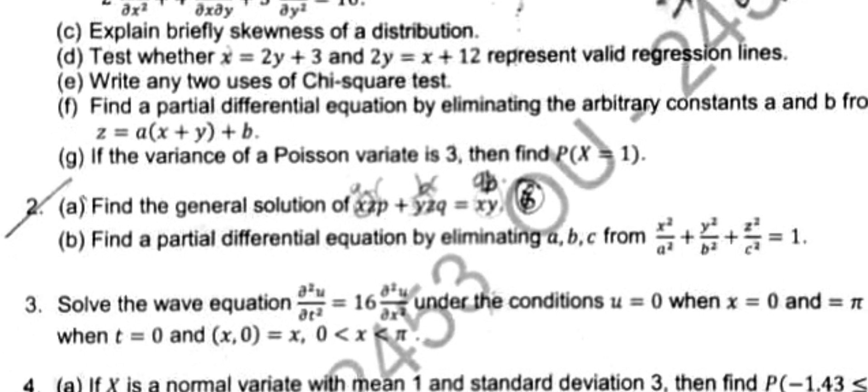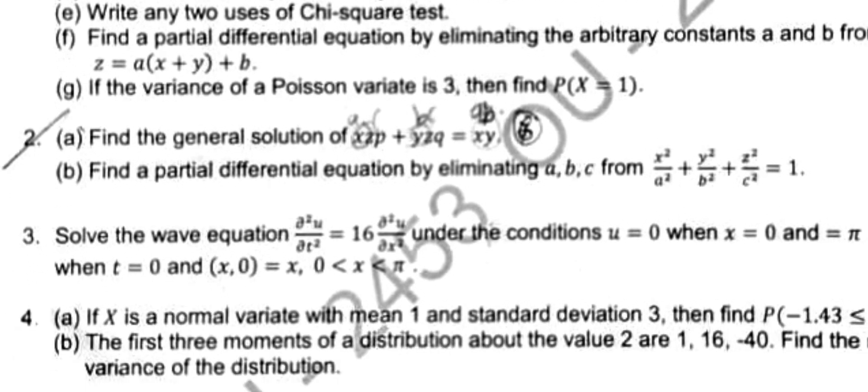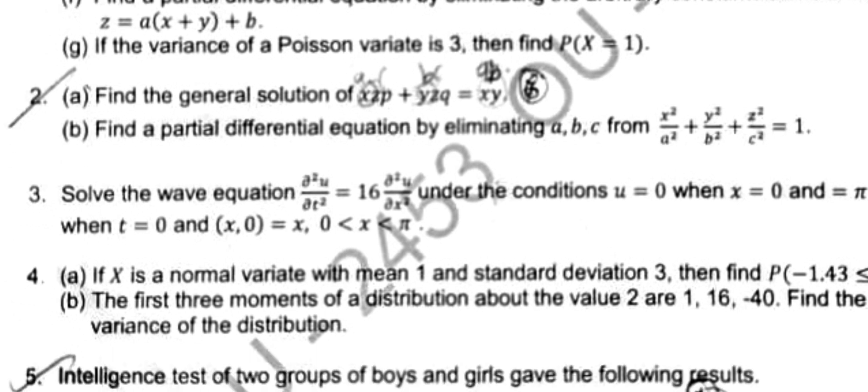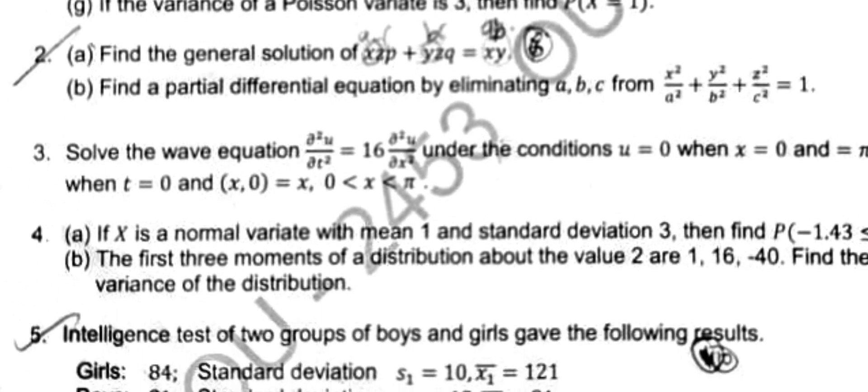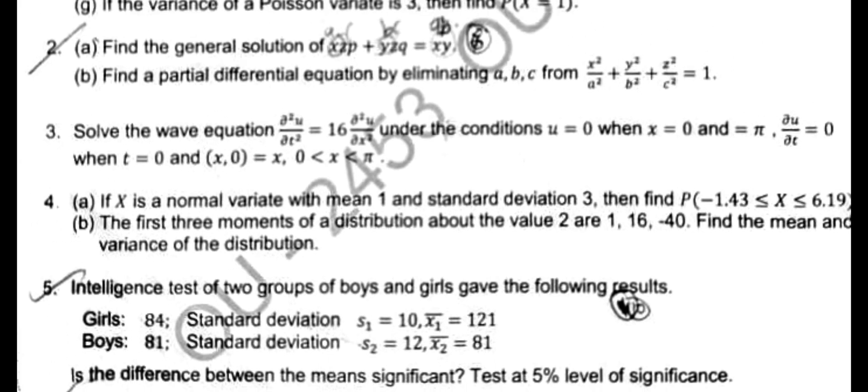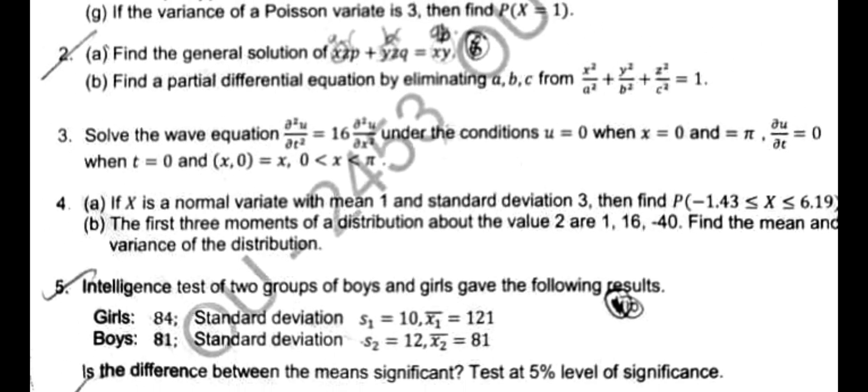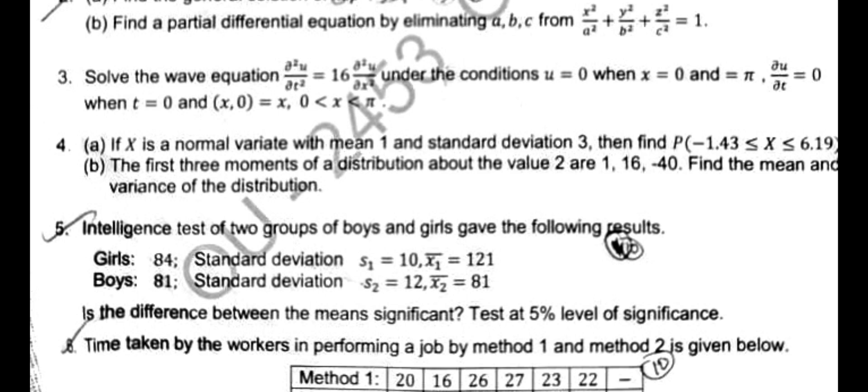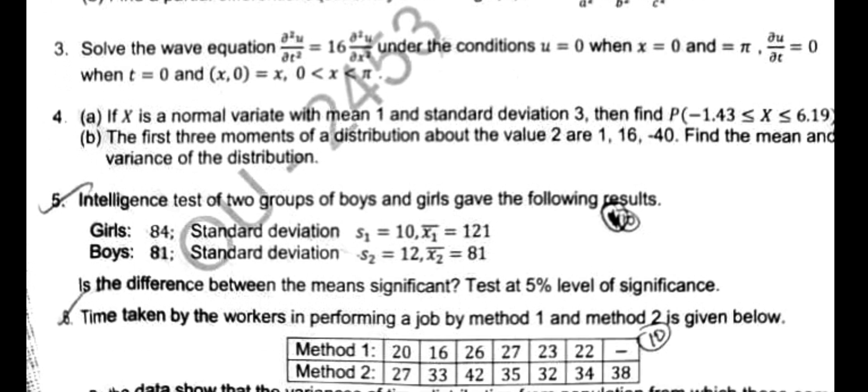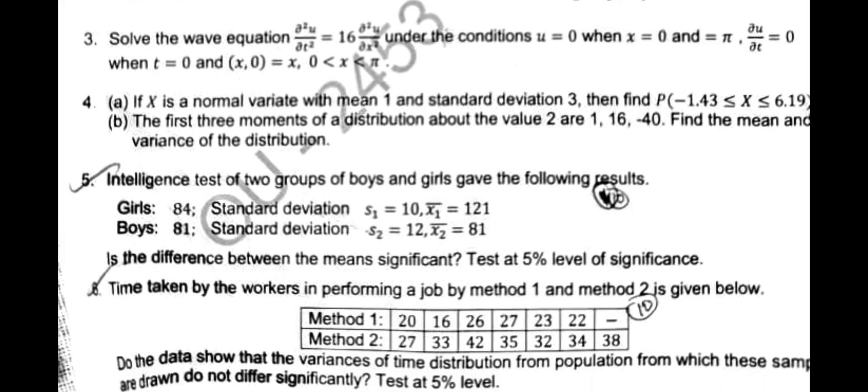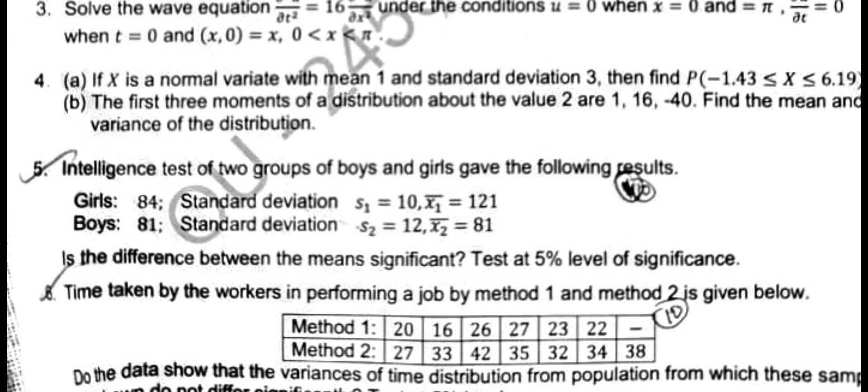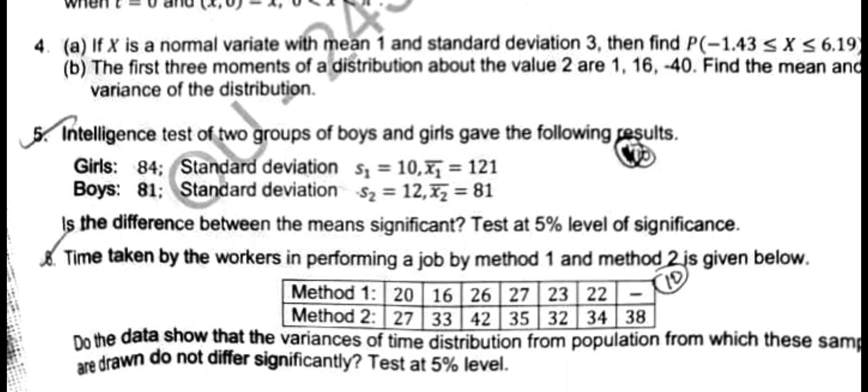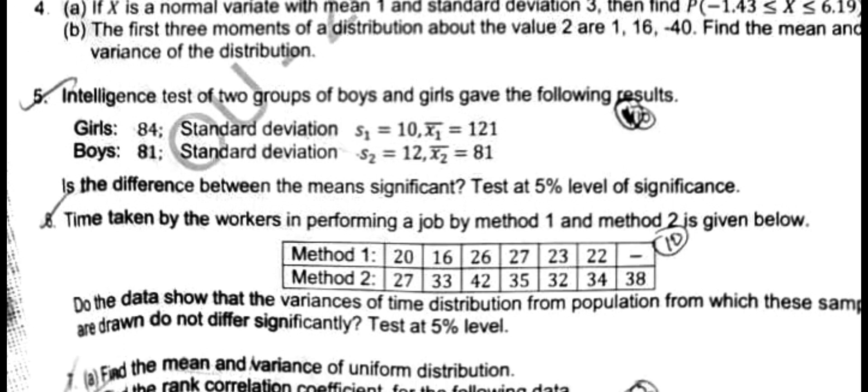Second question he gave, second main A is Lagrange's. Then find a PDE eliminating ABC, formation of PDE. Third one is one dimensional, two dimensional wave equation he gave here. Fourth main A, normal distribution. B is moments. Fifth main A is directly two samples he gave here - two standard deviations, two means. Sample size is greater than 30, so two means problem you have to solve. Direct 14 marks he gave here for the fifth question.